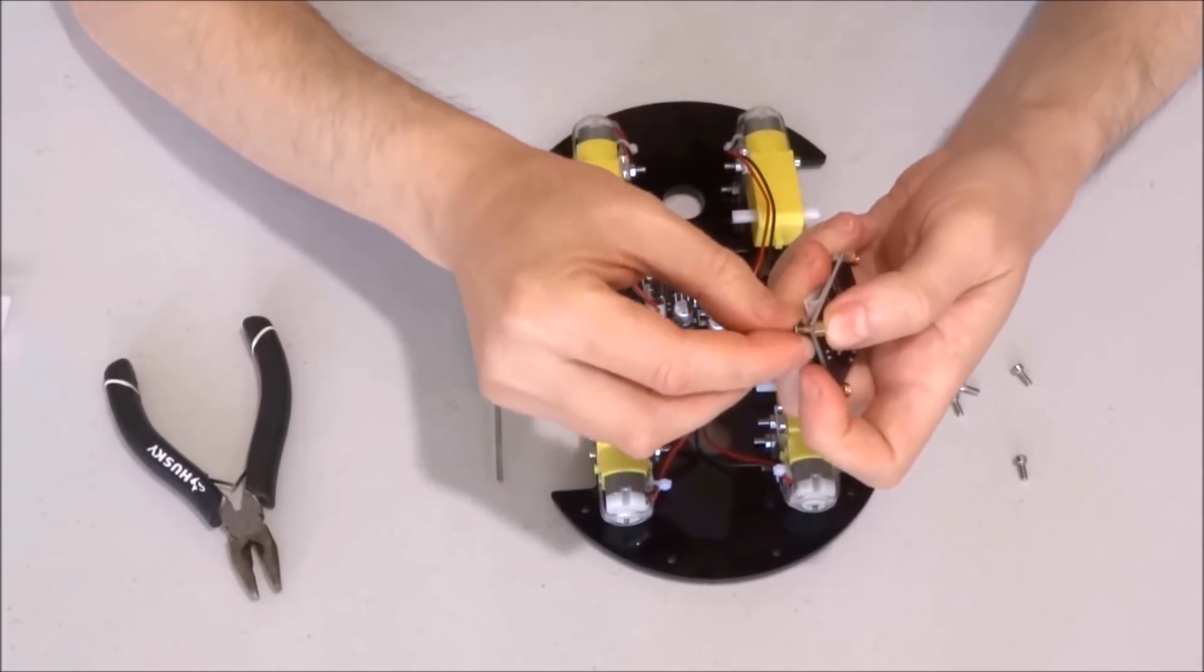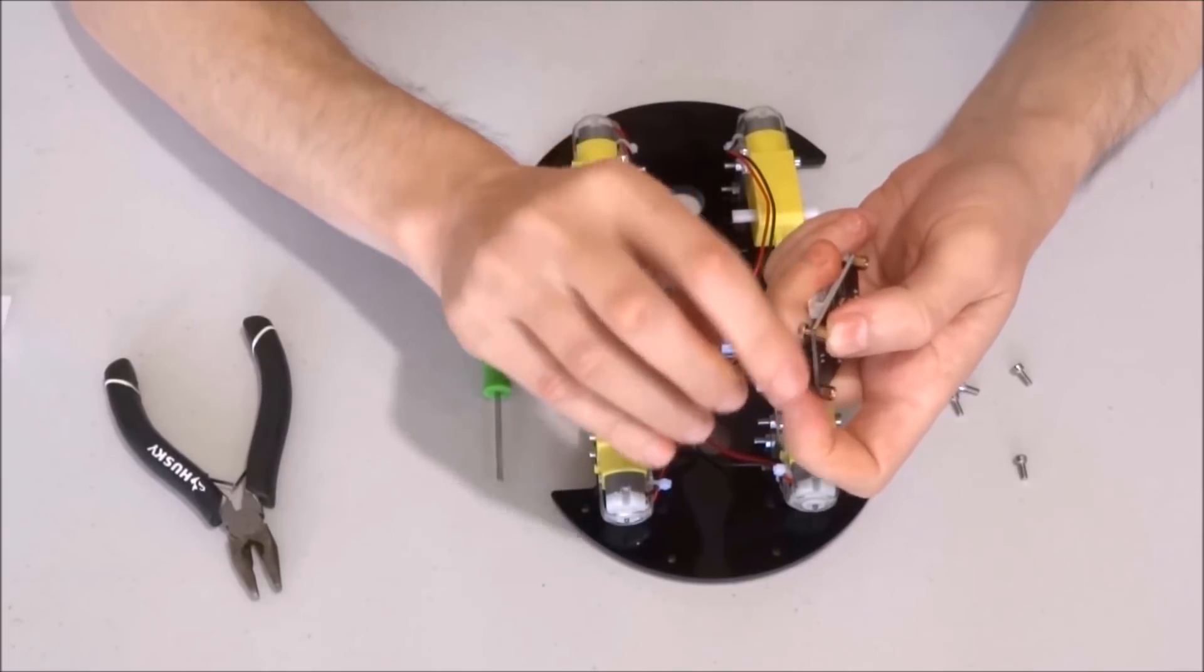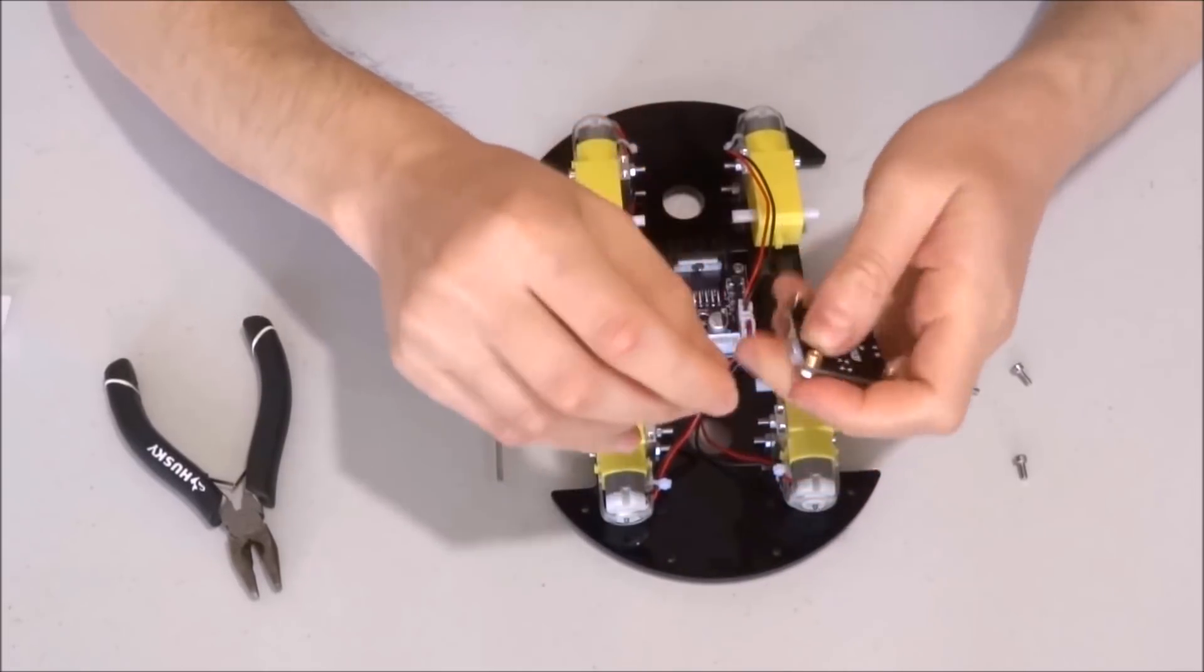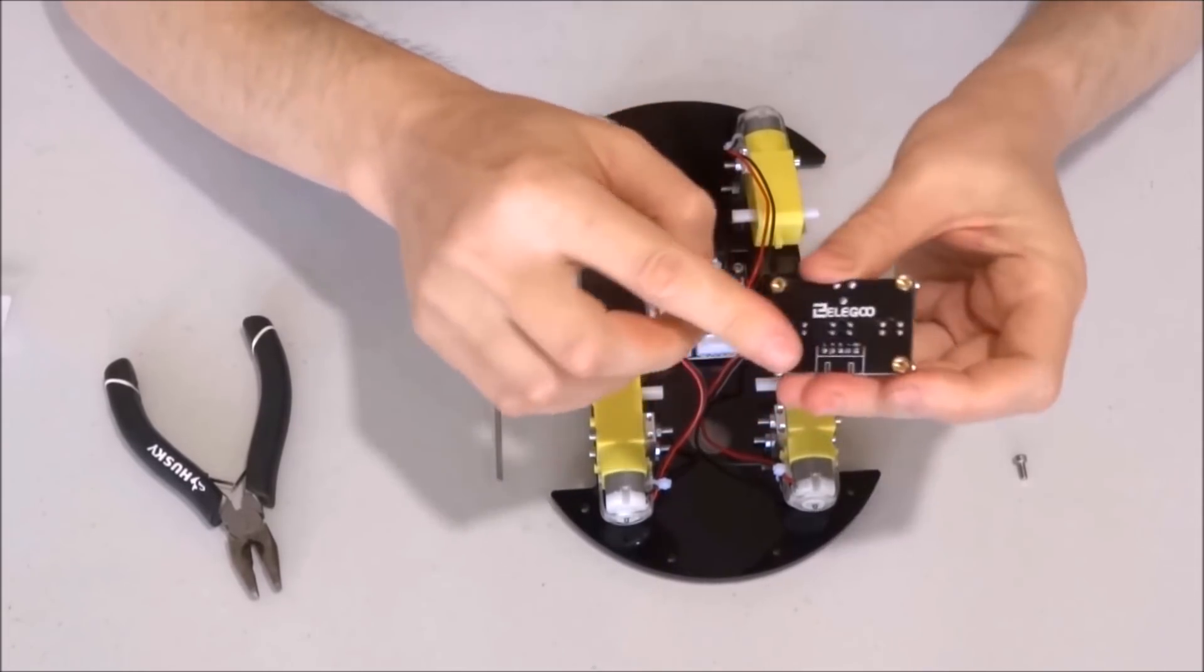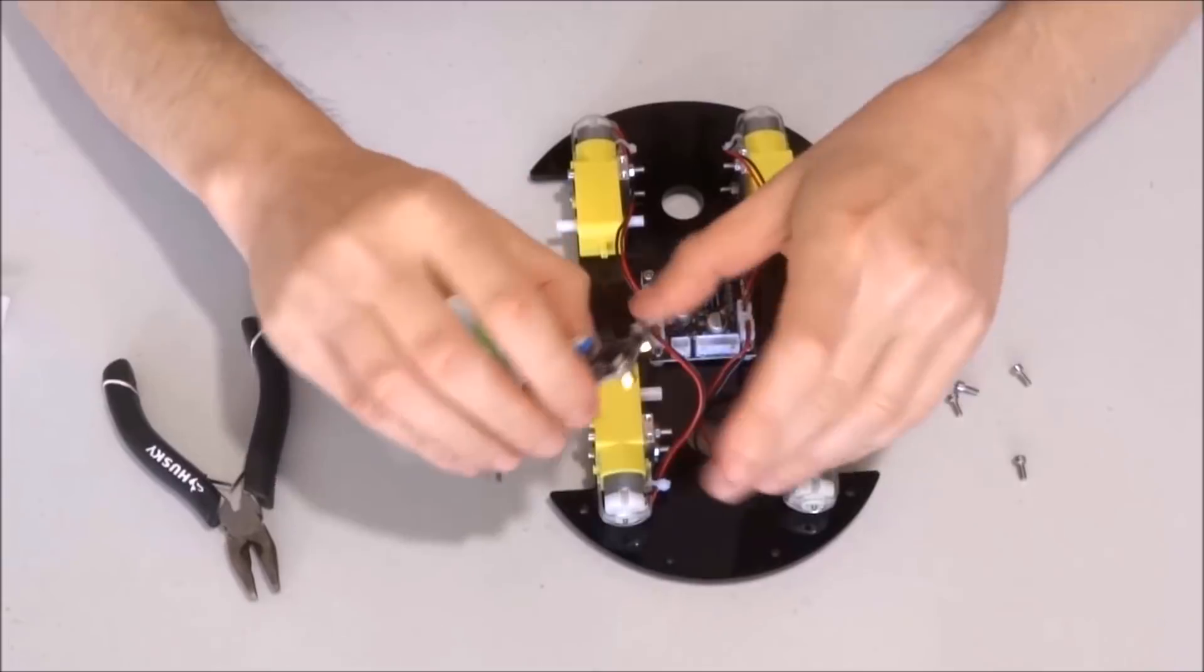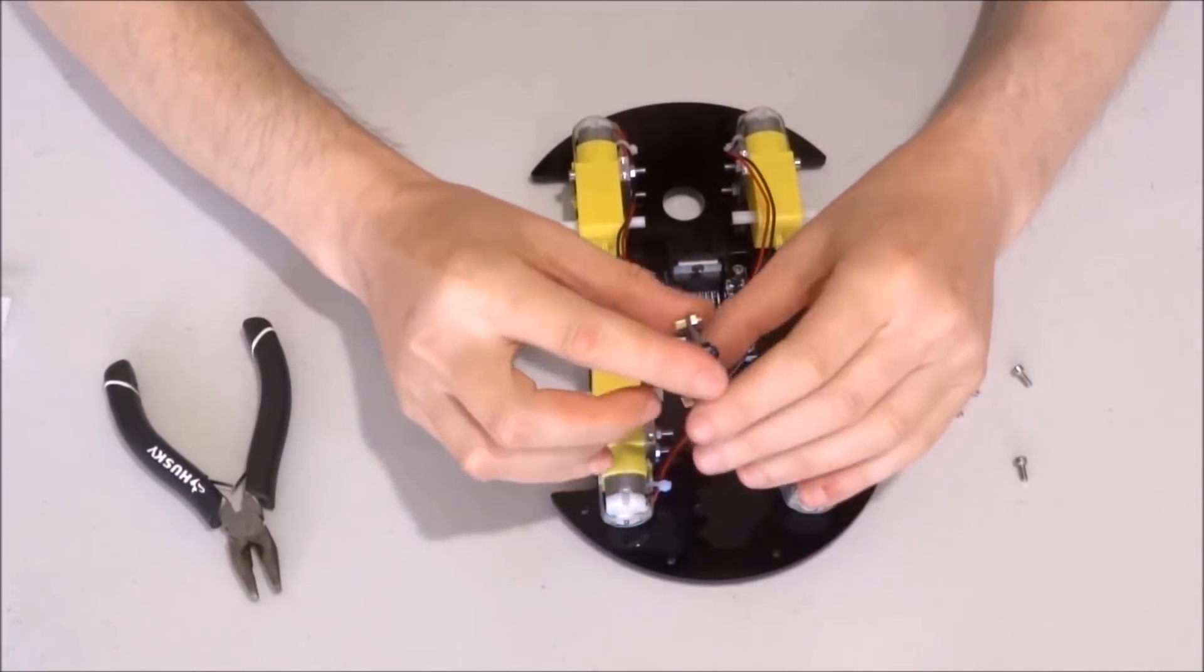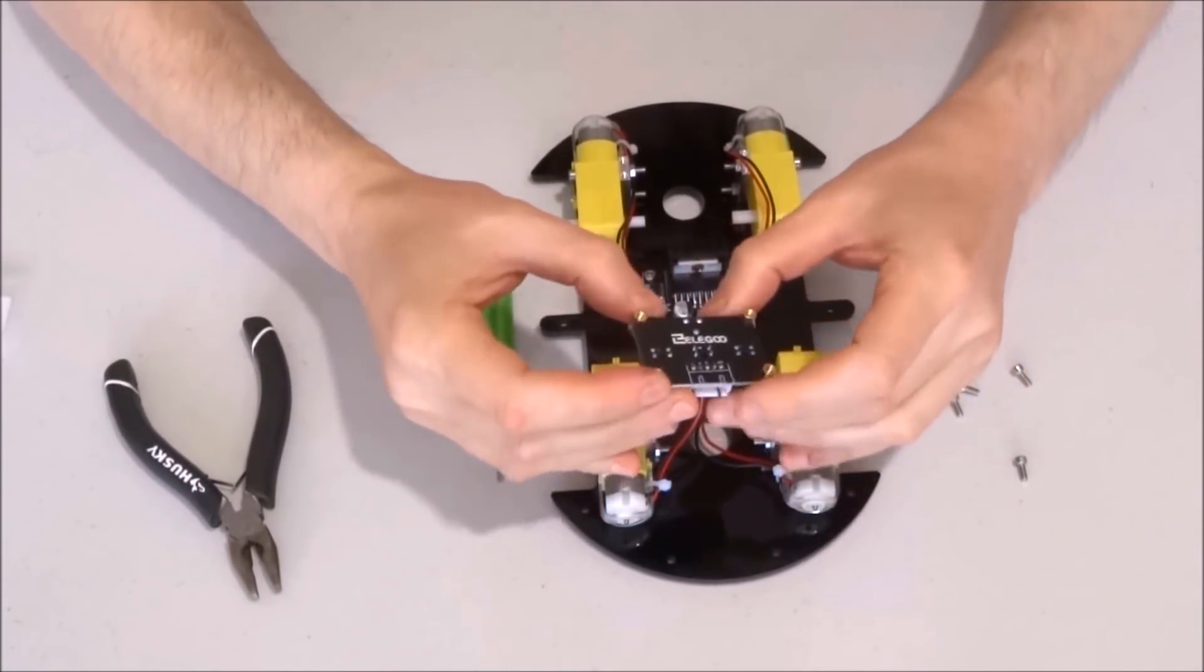Again, compared to the previous version of the robot, here we need to mount only four spacers instead of six. The sensor board is ready to be mounted.